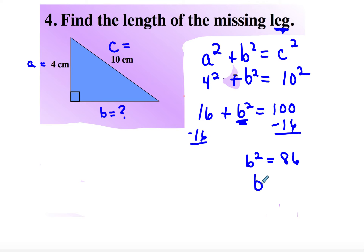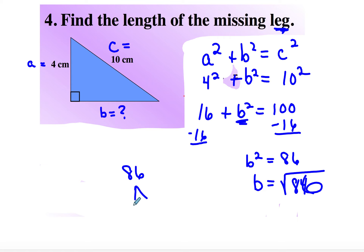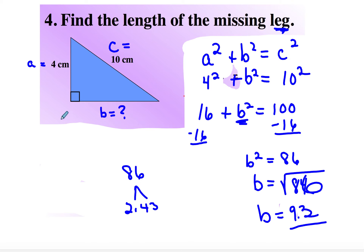So I get that B squared is equal to 86, and B is equal to the square root of 86. If I factor 86, it's 2 times 43, and there's absolutely nothing I can do to simplify it. So this would be a good one to just take the square root in the calculator. When I do the square root, I get that B is equal to 9.3 centimeters.